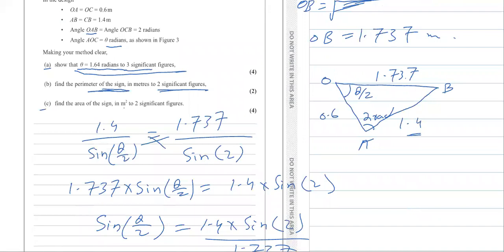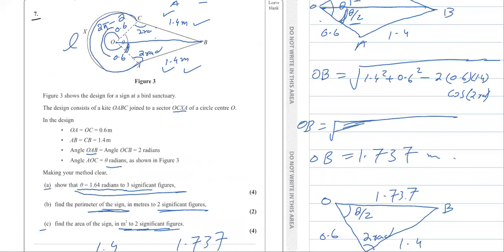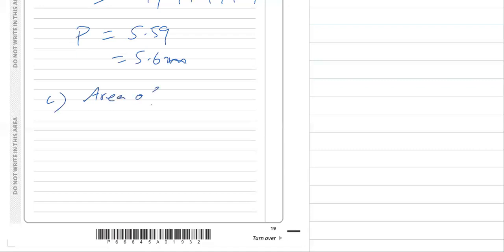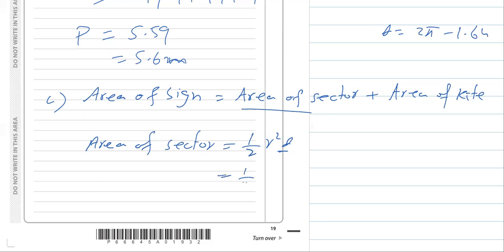Part C asks for the area of the sign in meters squared to 2 significant figures. The area consists of two parts: the sector and the kite. The area of the sign equals the area of the sector plus the area of the kite. The area of the sector uses formula one-half R squared theta, where theta is 2π minus 1.64, so it is one-half times 0.6 squared times (2π minus 1.64).